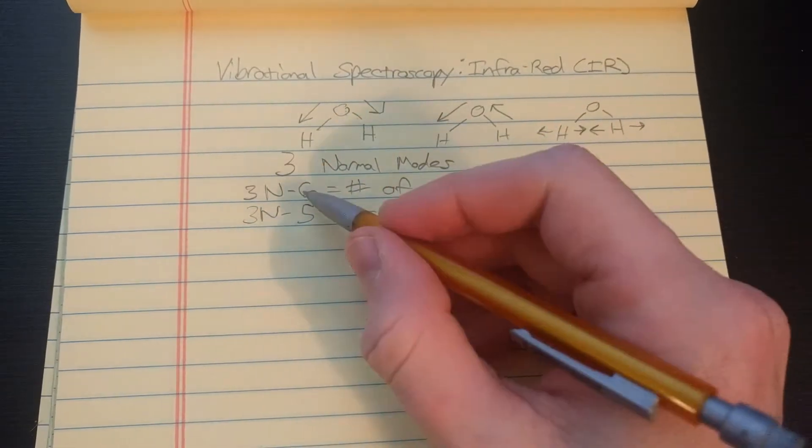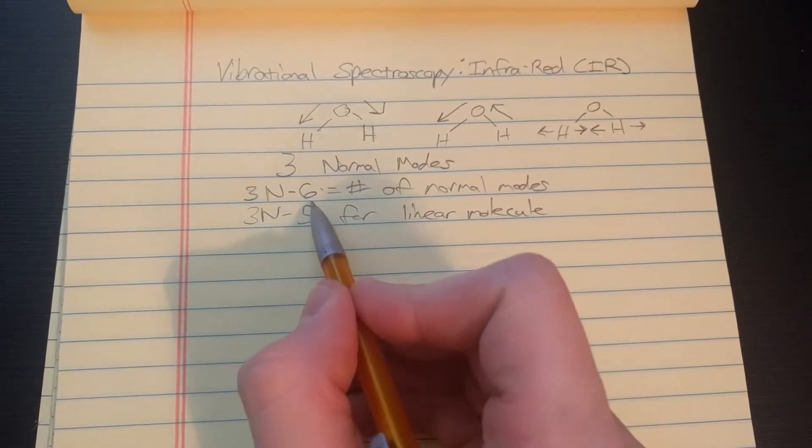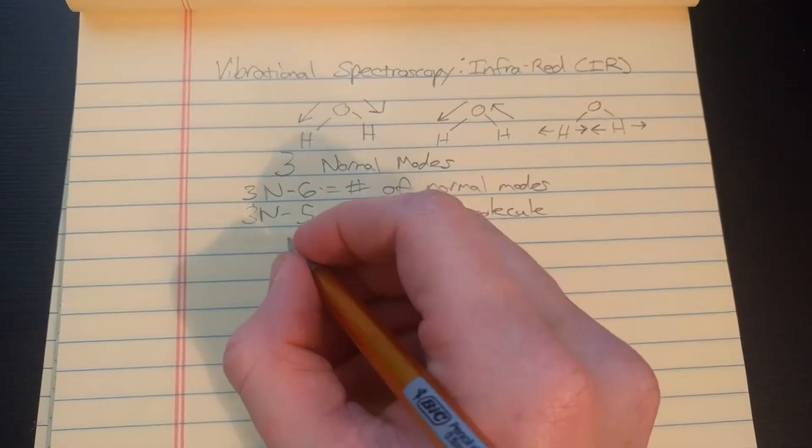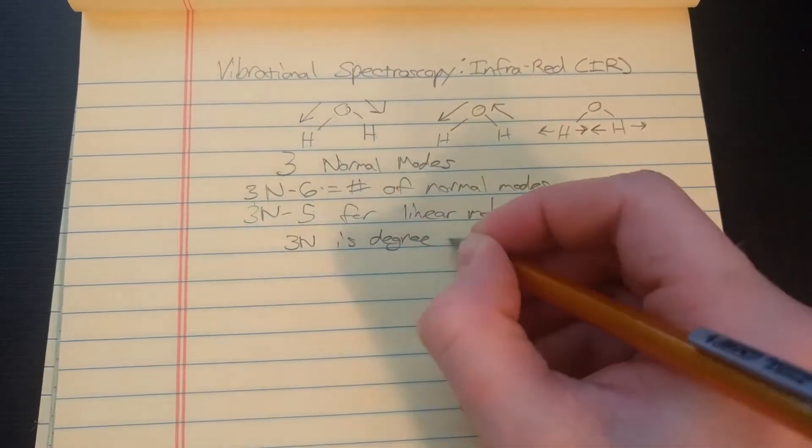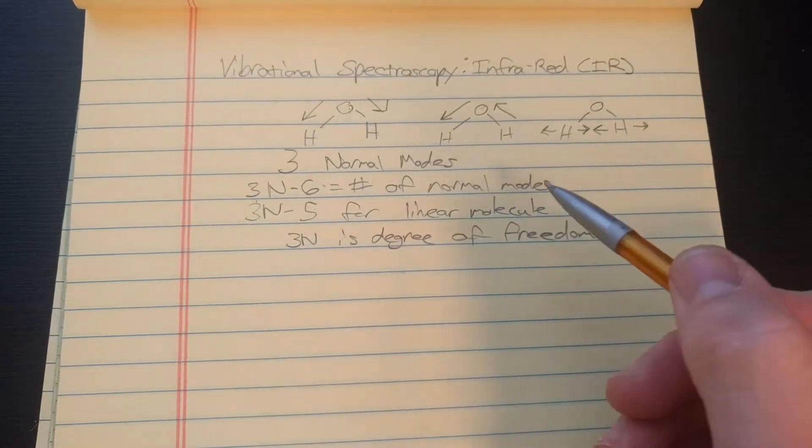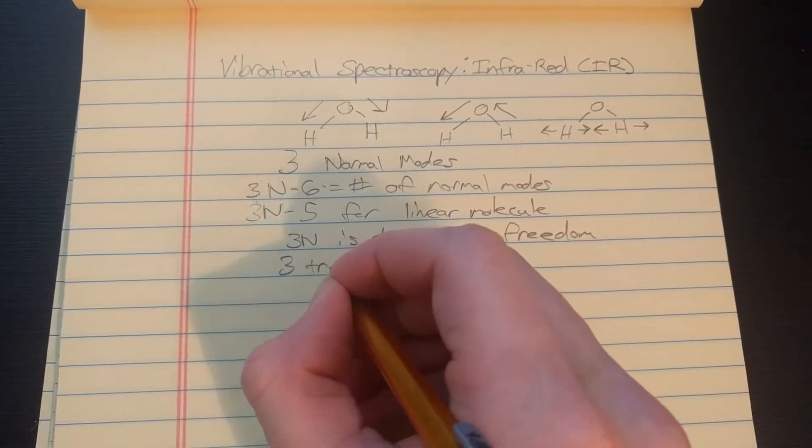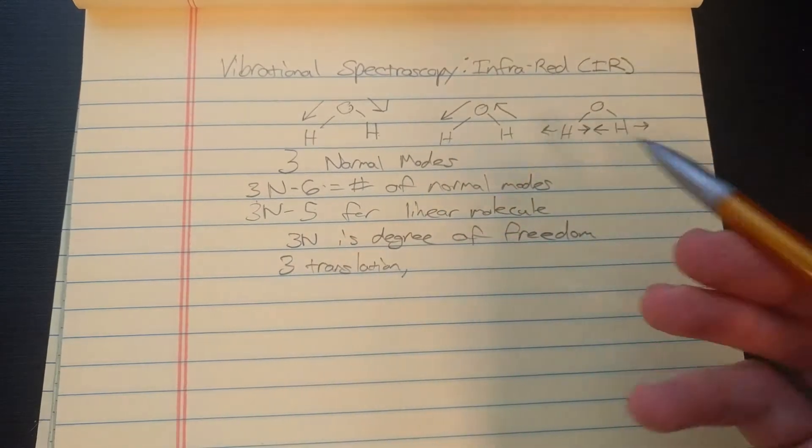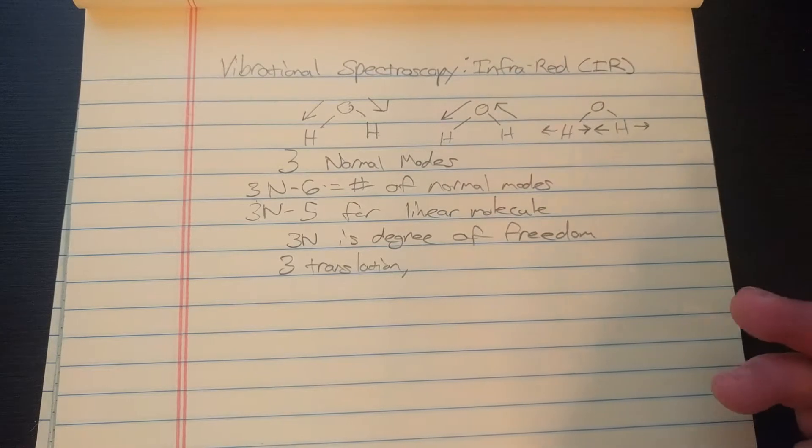And you might ask, where's this 5 or this 6 come from? So this is the total number of degrees of freedom. 3n is the number of degrees of freedom. And a molecule can translate in three ways. So there's three translation degrees of freedom. It can go forward, backwards, up, down, or left and right.